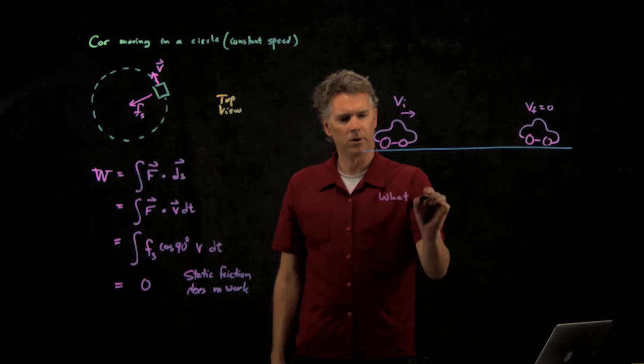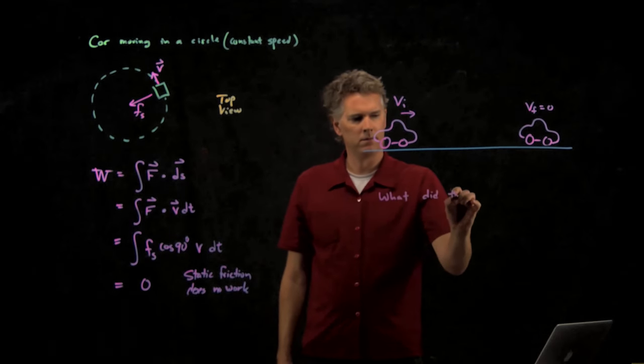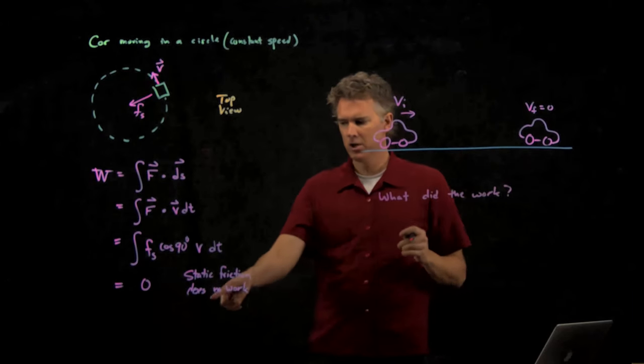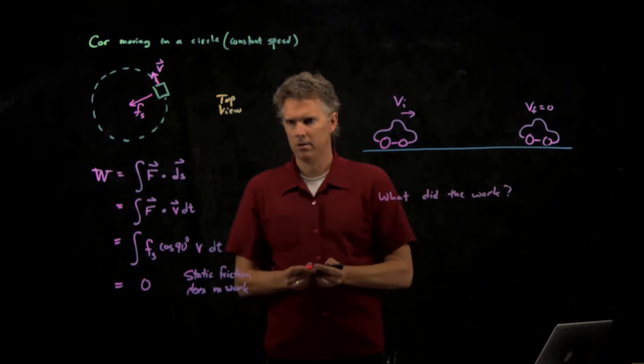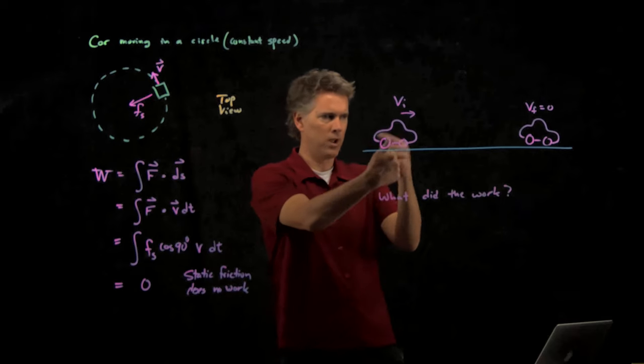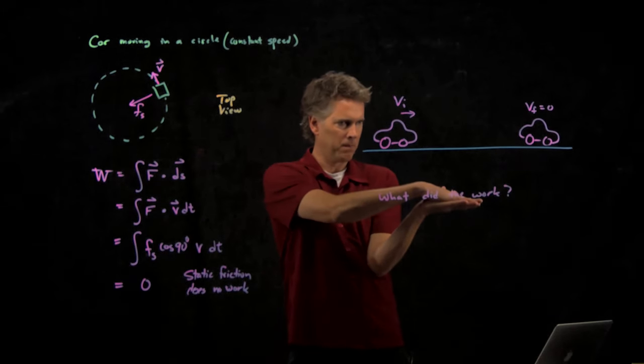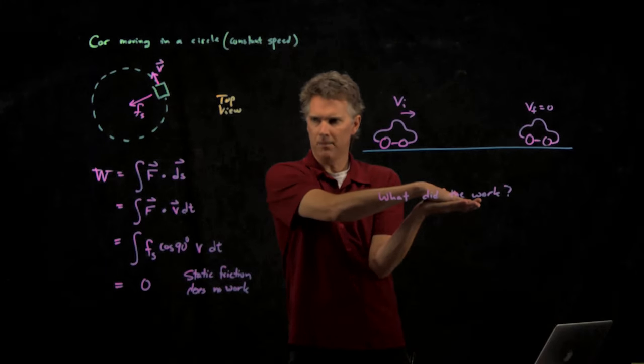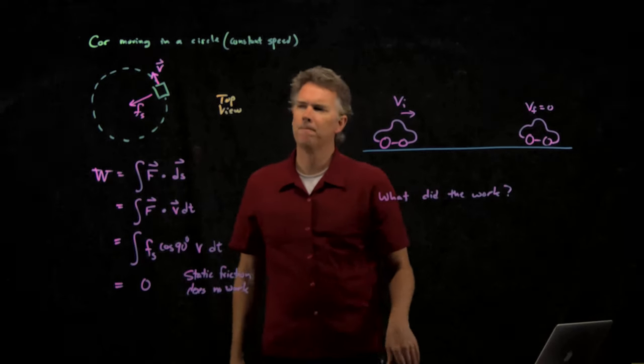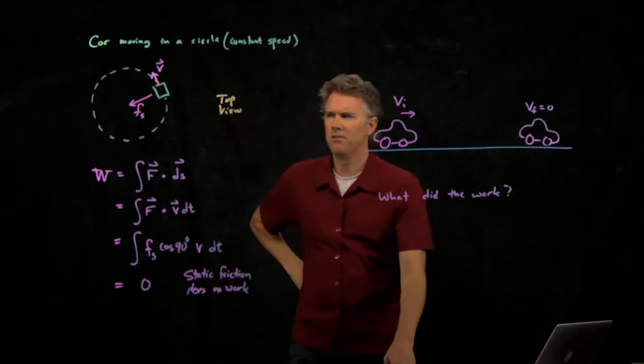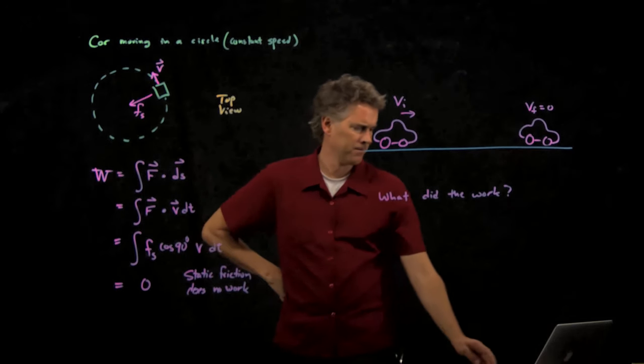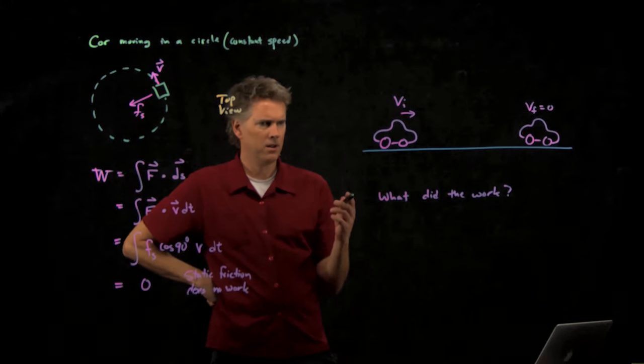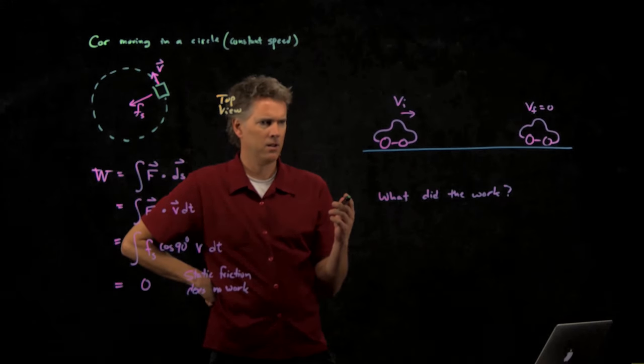So, what did the work? If static friction did no work, then the wheels, as they roll on the cement, that can't be doing the work to stop the car. So, what did the work? What do you guys think? The brakes.